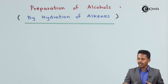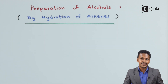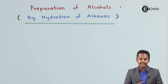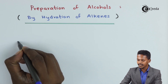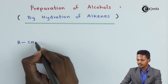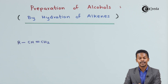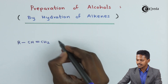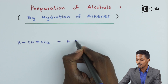In this topic I am going to talk about the preparation of alcohol by hydration of alkene. Let me explain with the help of a general reaction. Suppose we are considering an alkene, RCH=CH2, and suppose we are doing a hydration process, so we are introducing water, that is HOH.